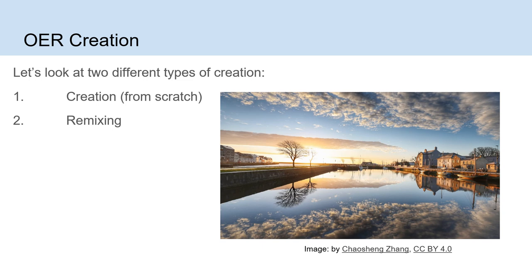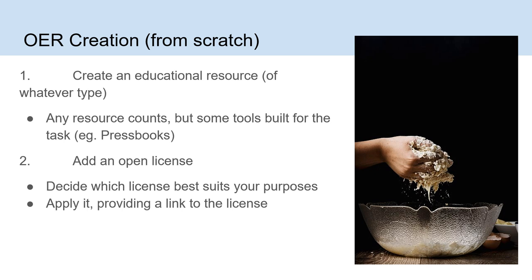There are two basic types of creating open educational resources. You can either create from scratch — create new material and put a license on it — or you can remix or revise a resource, or multiple resources, that you find useful and create something new out of already existing open materials. If you're creating something from scratch, any educational resource could be turned into an open educational resource. You can use whatever tools you use for your teaching, but some tools are built specifically for the task — for example, Pressbooks, which we're subscribing to at NUI Galway right now. You create that resource and then you add an open license to it.